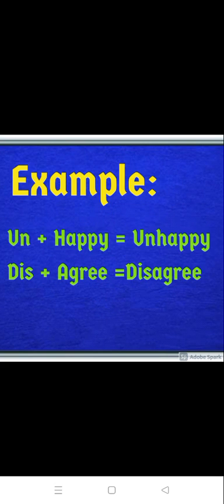For example, when we add UN to happy, it becomes unhappy. DIS to agree, it becomes disagree.